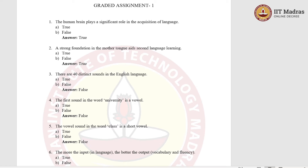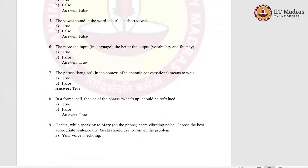The fifth question is: the vowel sound in the word 'class' is a short vowel. Option A, true. Option B, false. The right answer is option B, false. Because try pronouncing 'class' — you don't say 'class,' you say 'class.' So the vowel sound there is 'a' and it's the long vowel 'a.' It's 'class,' not 'class.' Therefore, the answer is a long vowel, because of which we choose the answer as false.